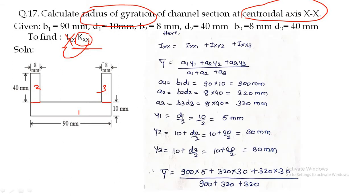From all the previous examples, you know that when different planes are added together, we add the moment of inertia of those individual planes. So IXX equals IXX1 plus IXX2 plus IXX3. Now, in the last question the C-section was symmetrical about the horizontal central axis, but in this case the channel section given here is NOT symmetrical about the horizontal central axis. If you draw a horizontal line at its center at 25 mm (half of total height 50 mm), the upper and lower sections are not the same — so the plane is not symmetrical.